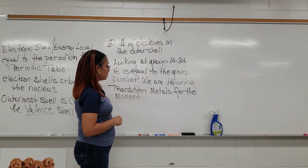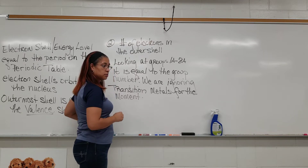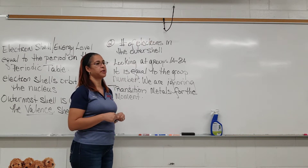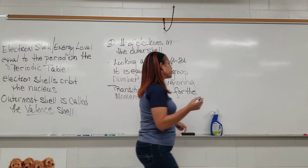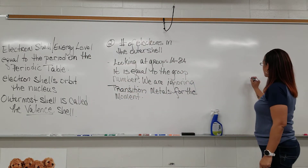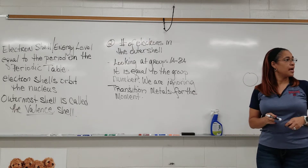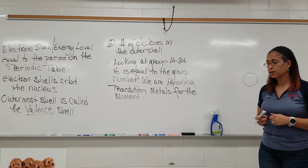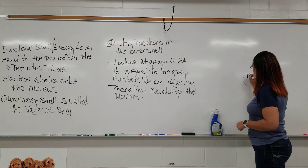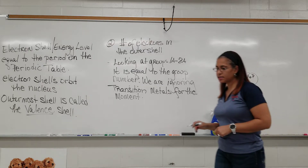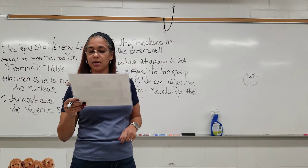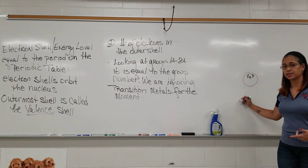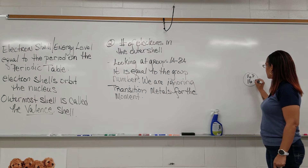Looking at a Bohr model, let's actually create an element. I'm going to go with sulfur. Sulfur is in the third period and it is atomic number 16, which means it has 16 protons. Sulfur's atomic mass is 32.06, which rounds to 32. So 32 minus 16 gives us 16 neutrons.